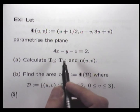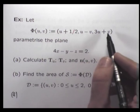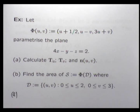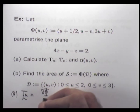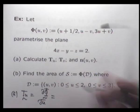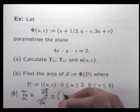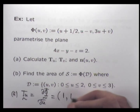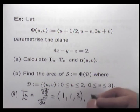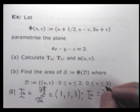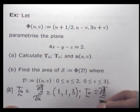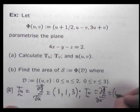For part A, to calculate the tangent vectors, we just differentiate each component of our parametrization and write it as a new vector. Differentiating here, T_U is going to be (1, 1, 3). And T_V — we differentiate with respect to V — that's going to be (0, -1, 1).